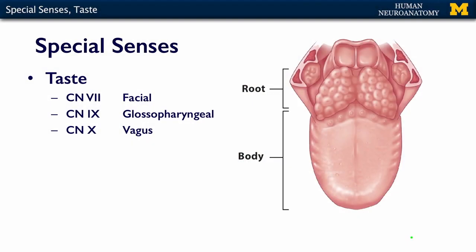The sense of taste, or your ability to taste things, is relayed by three different cranial nerves because they cover different areas of the tongue and the upper part of the larynx or pharynx. The first one is the facial nerve, the second is the glossopharyngeal nerve, and the third is the vagus nerve, which we'll talk about more when we discuss parasympathetics.